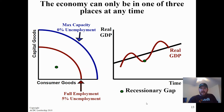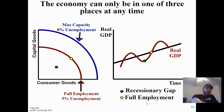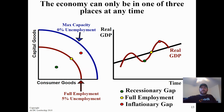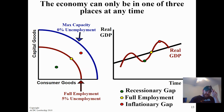An inflationary gap occurs when we're below the natural rate of unemployment — below four percent in reality, or below five percent for theory purposes in class. Resource prices are heating up, things get more expensive, and we're just inside our maximum capacity on the PPC curve. On the business cycle, we're at the peak, showing an increase in prices.